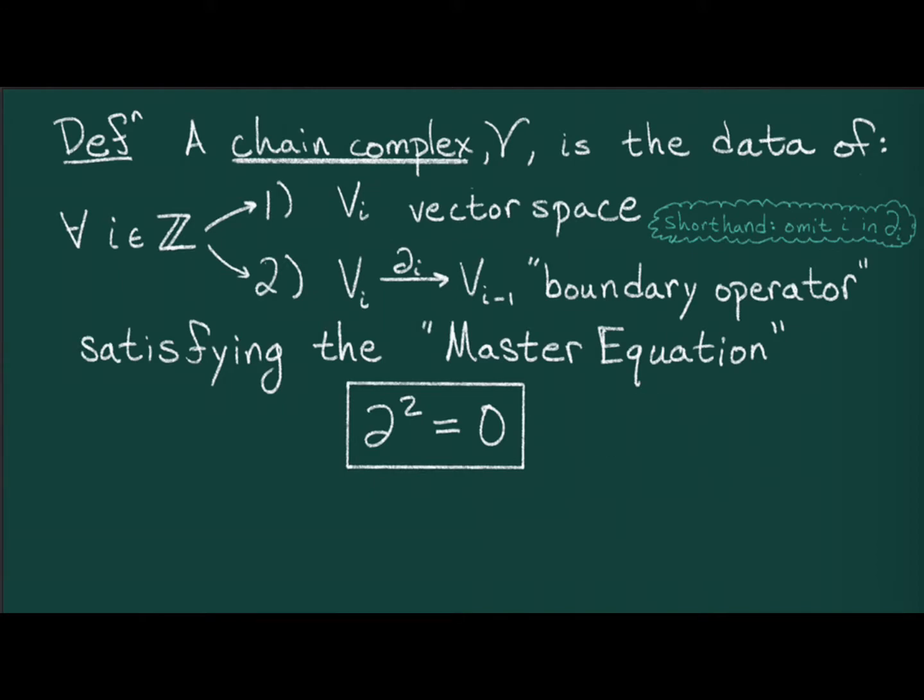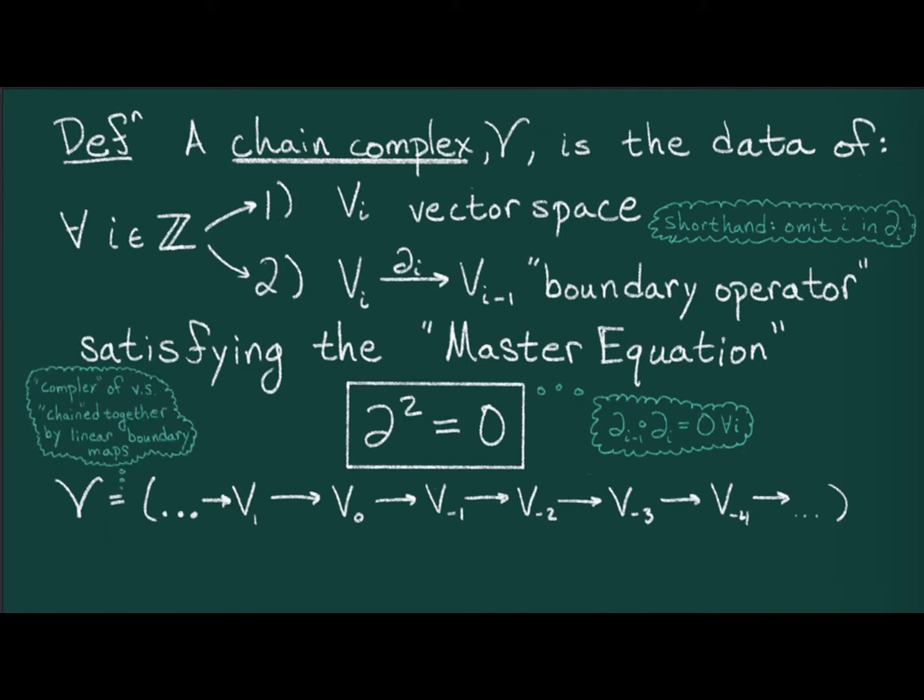Again, this means that ∂_i composed with ∂_{i-1} is zero for all i. This data is sometimes depicted as a complex of vector spaces chained together by linear maps. A quick conceptual note: I want to emphasize that, even though a chain complex is made up of a hierarchy of data, you should think of a chain complex as a single object like a vector space.